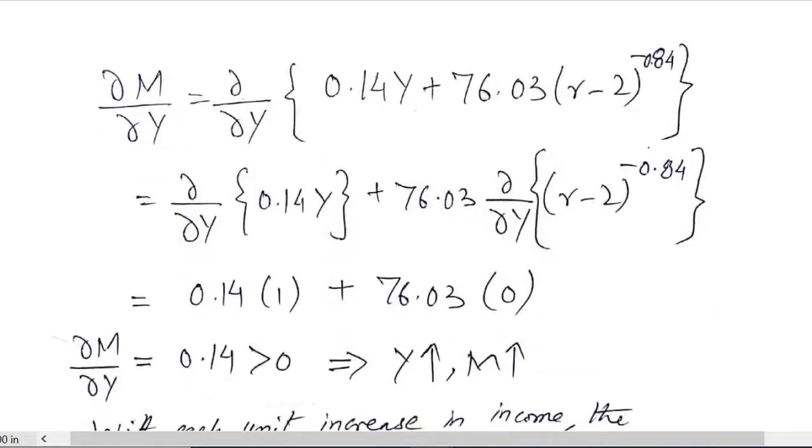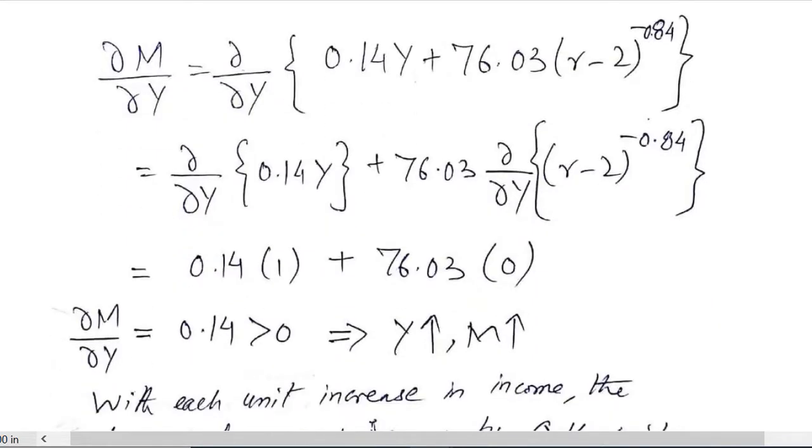So this demand for money function is now differentiated with respect to Y. Here you can see on both sides we have introduced the derivative with respect to Y. Some theorem will be applied on these two terms that are separated with the positive sign. Here we know that there is Y so the derivative is equal to 1 and the answer is equal to 0.14.